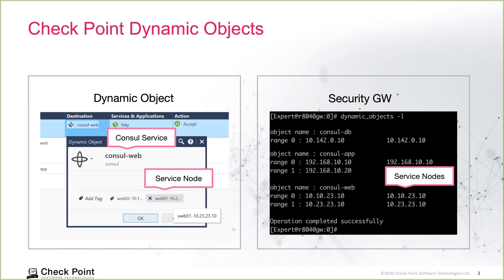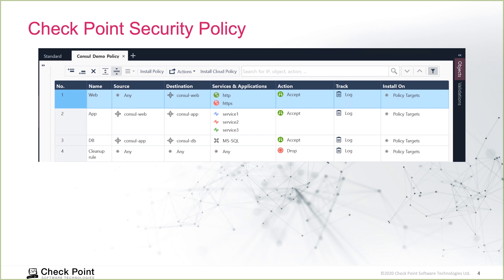Under the hood, we're using dynamic objects. On the left, we have our Console service, which is the dynamic object name. Then we have each service node as a tag value that also represents the IP addresses of each node. On the right-hand side, we have an output from our security gateway representing the service and service node IP addresses. Once the object is created, we can put them in our security policy. No matter how many times each node IP address changes, you don't have to go through the change management approval process to install a policy, as the IP address is updated automatically.